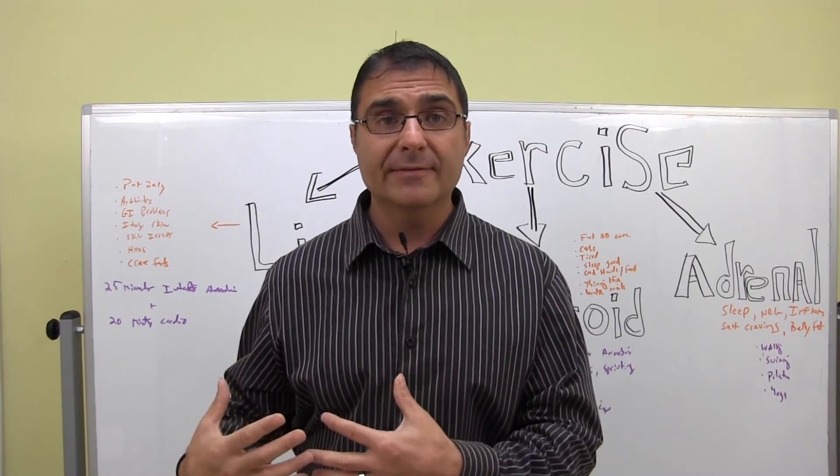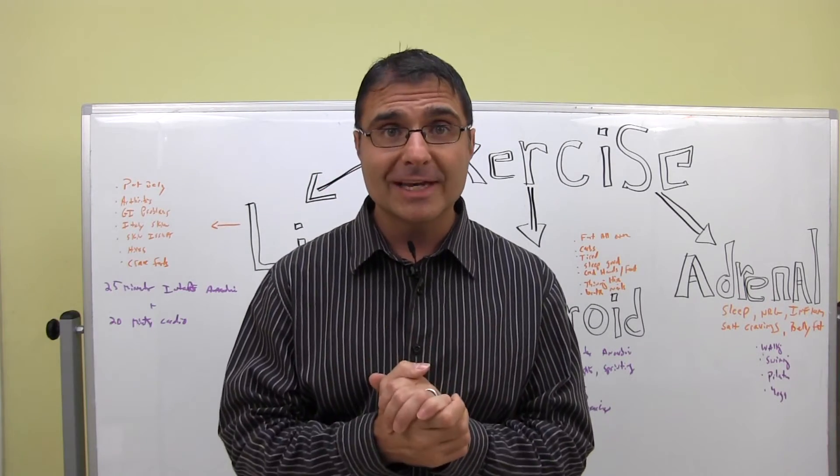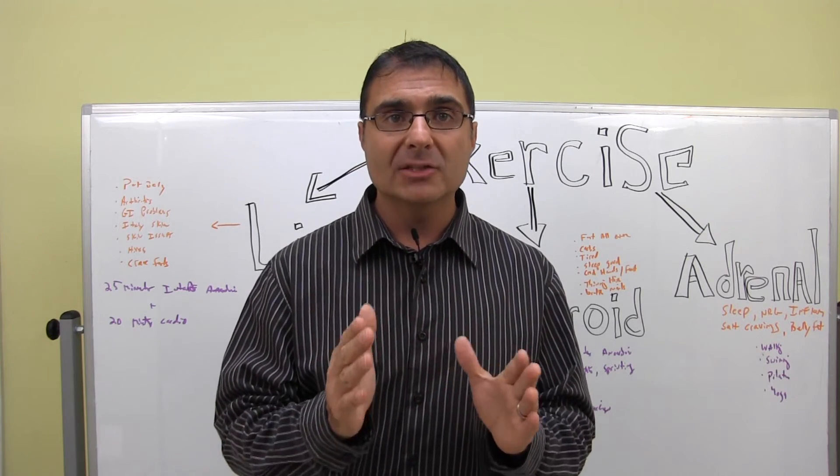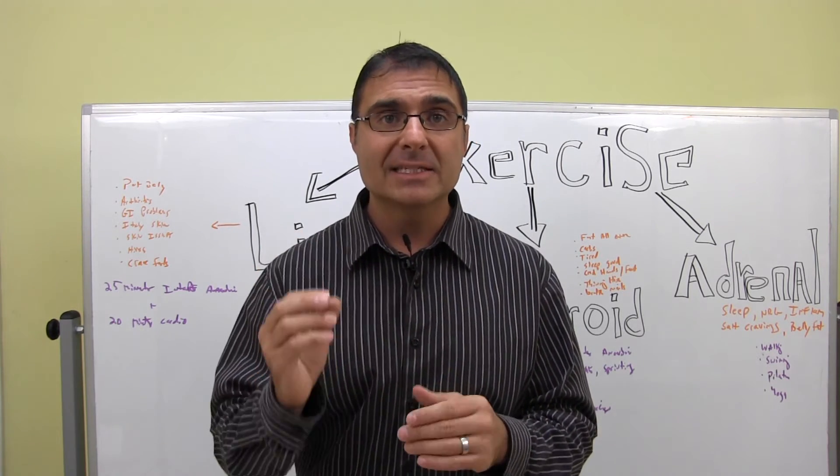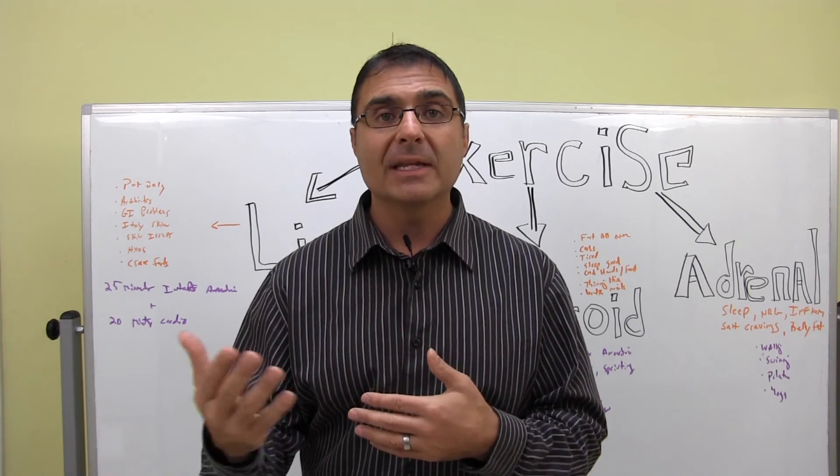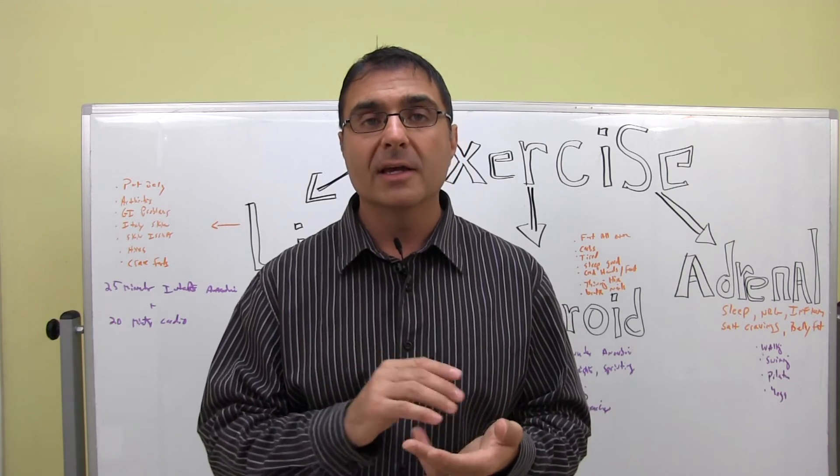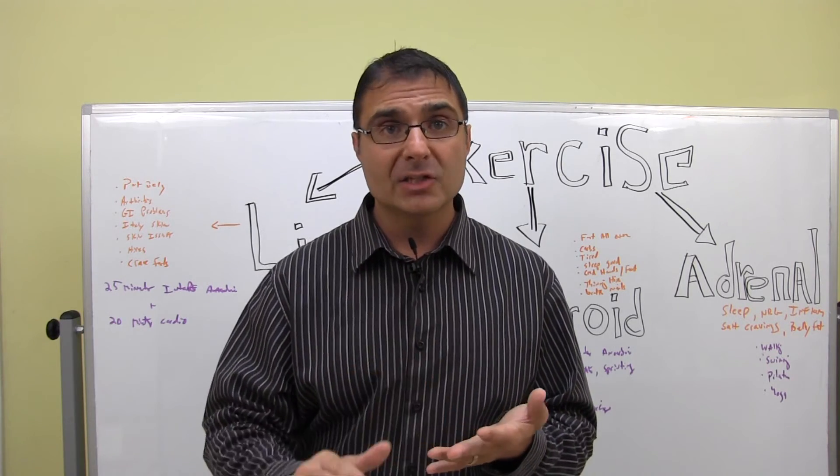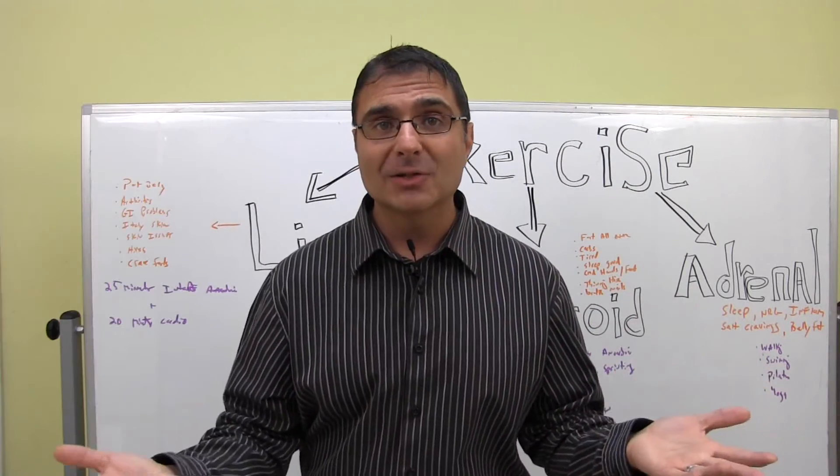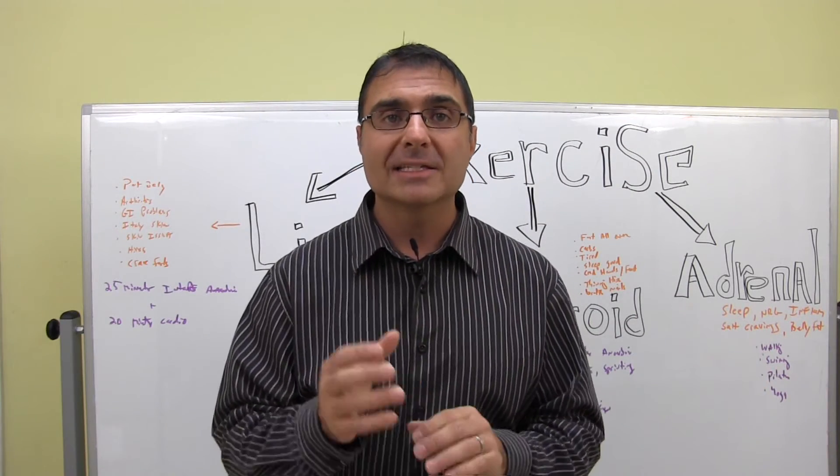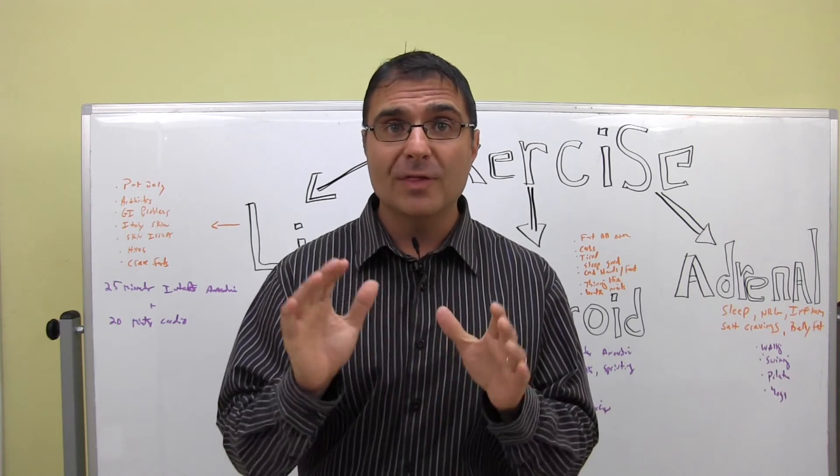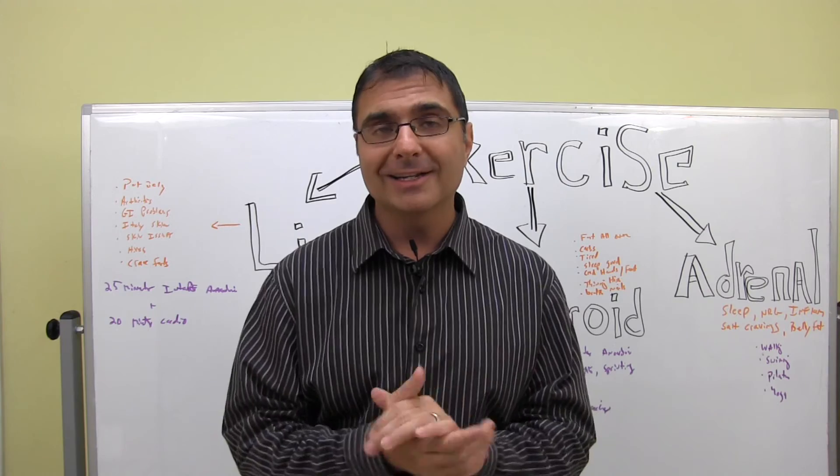For the liver cases, people that have liver issues and those liver type symptoms, you really want to look more towards about 20 to 25 minutes of intense anaerobic activity, followed by about 15 to 20 minutes or even 25 minutes of light cardio, walking, light biking, light swimming, even a gentle jog as long as it's not too intense. Those are three different glands in your body or organ in the liver's case that will break down. And those are some exercises that go along great with those particular areas of the body.